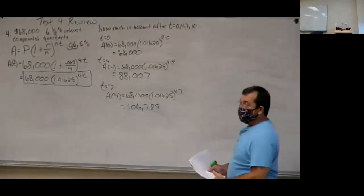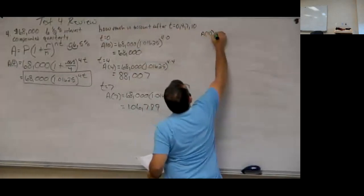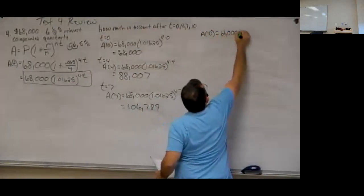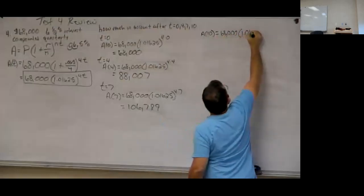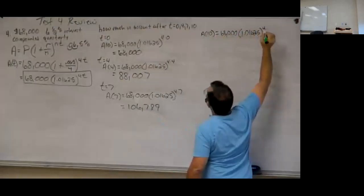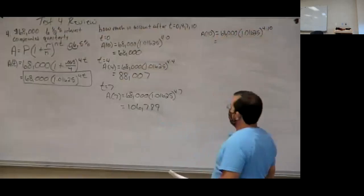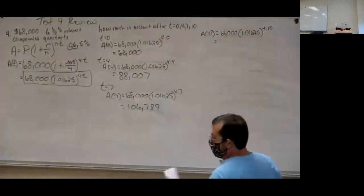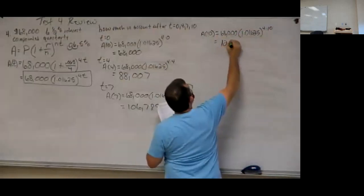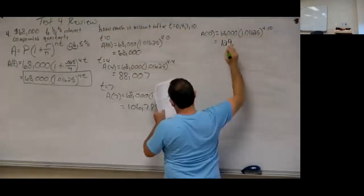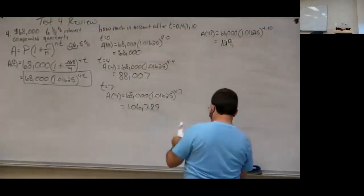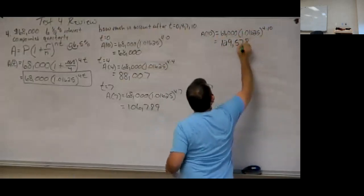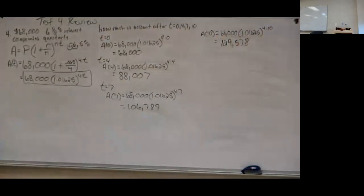We're definitely expecting the 10-year value to be even higher. A(10) equals 68,000 times 1.01625 raised to 4 times 10, which is to the 40th. I'm getting approximately $129,578. In 10 years, they almost doubled that money — they started with $68,000 and got pretty close to doubling it.